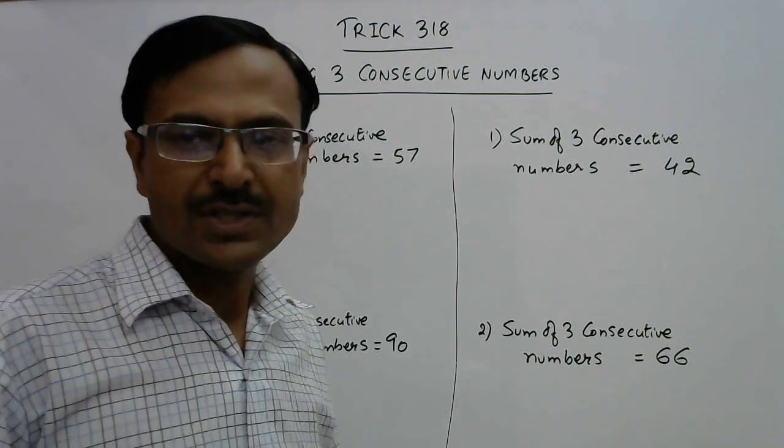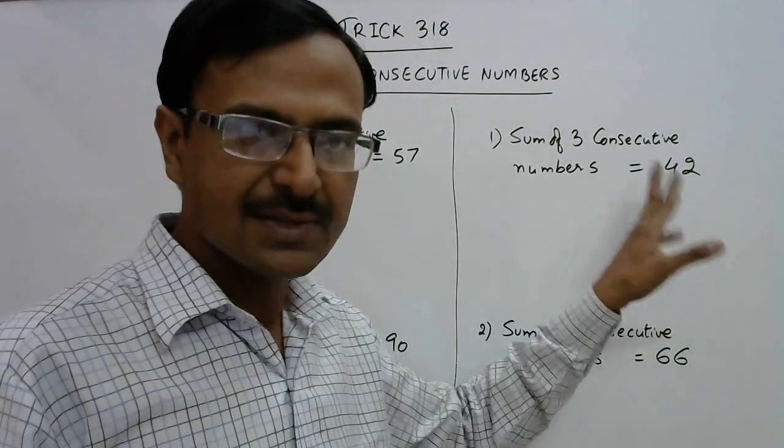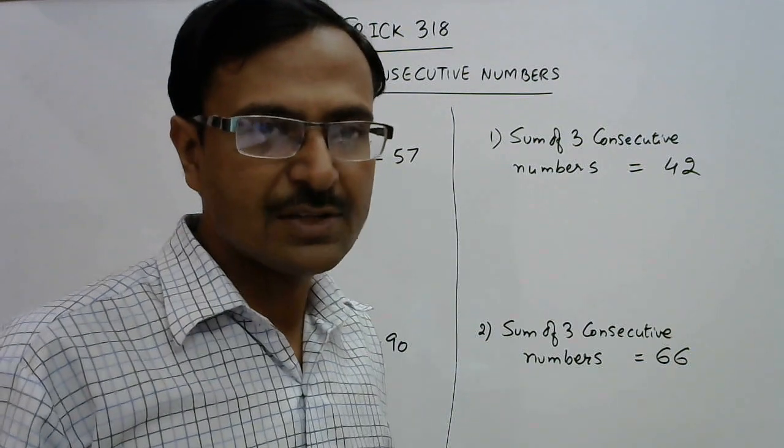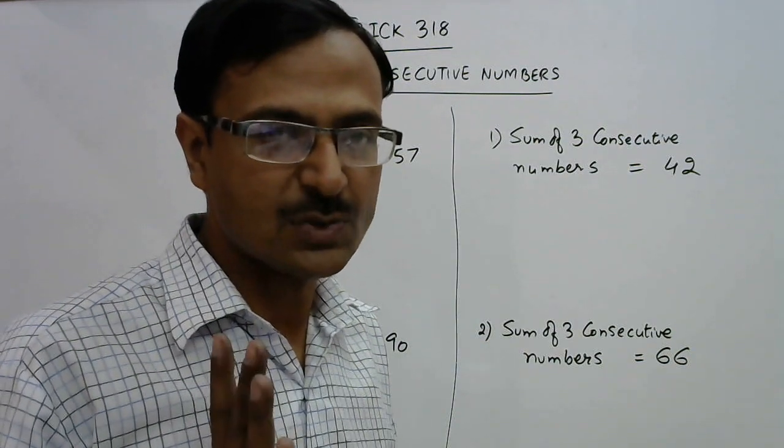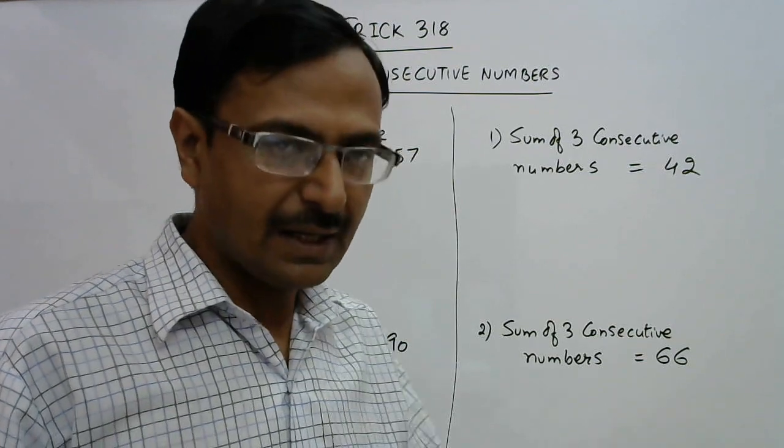The question is: find the three consecutive numbers whose sum is 42. Obviously you will assume the first number as x, second as x plus 1, third as x plus 2, and then frame an equation in one variable and solve that.